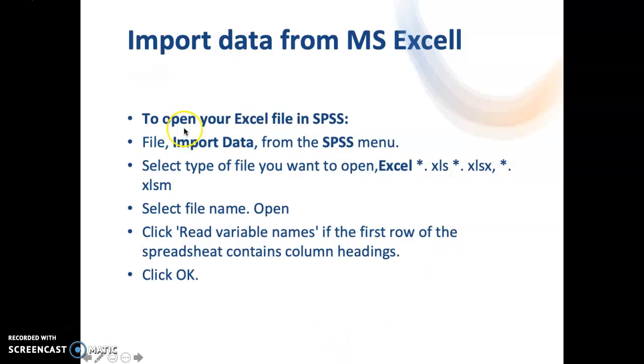So what you need to do is, first, you need to open your Excel file in SPSS, and then you need to click File on top of the menu bar of SPSS, and then choose Import Data from the SPSS menu. Select type of file you want to open. Let's say, for example, here you're going to choose Excel File, and then select the file name from your document or from your desktop of your computer. And select Open. Don't forget to click Read Variable Name if the first row of the spreadsheet contains column heading. And then after that, you just click OK.